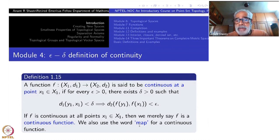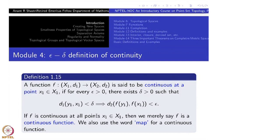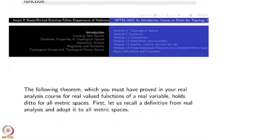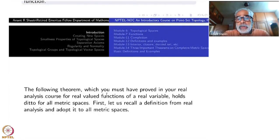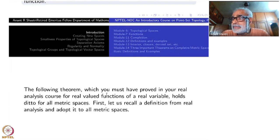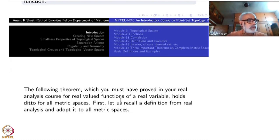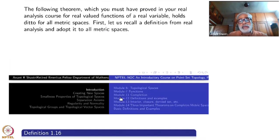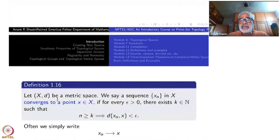We also use the word 'map' as a short term for 'continuous function.' One important thing is the use of sequences, which is also available to us in the case of metric spaces. So let us make one more definition: what is the meaning of convergence of a sequence in a metric space? Take a metric space (X, d) and take a sequence xn in X, supposed to converge to a point x.